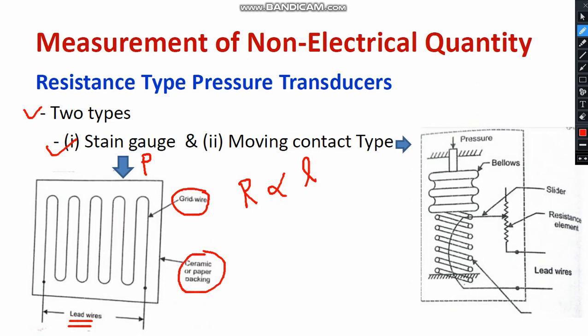As you know, resistance is directly proportional to length, and the cross-sectional area may also change. R is inversely proportional to area. So based upon the length and area of cross-section, the resistance is getting varied. With respect to the application of pressure, the resistance changes. Pressure is the input and resistance will be the output. By using a Wheatstone bridge, you can measure the unknown resistance. So pressure will be measured in terms of resistance.